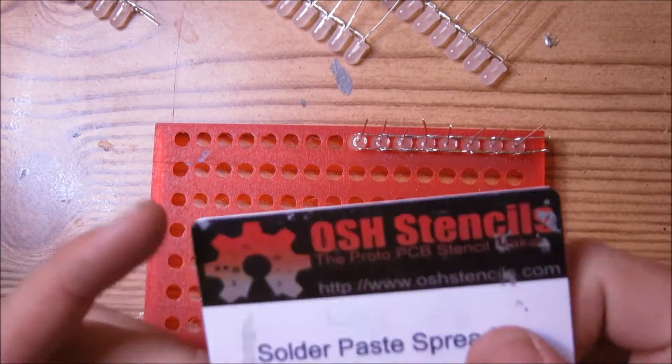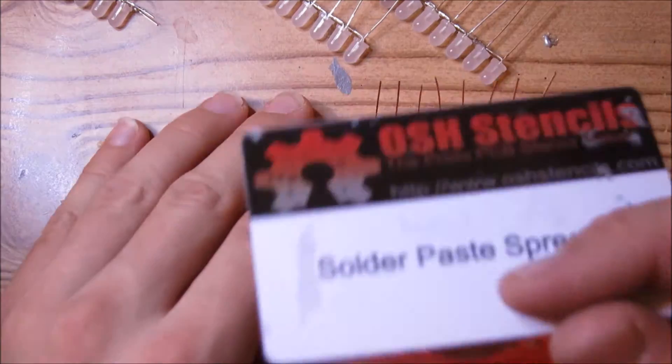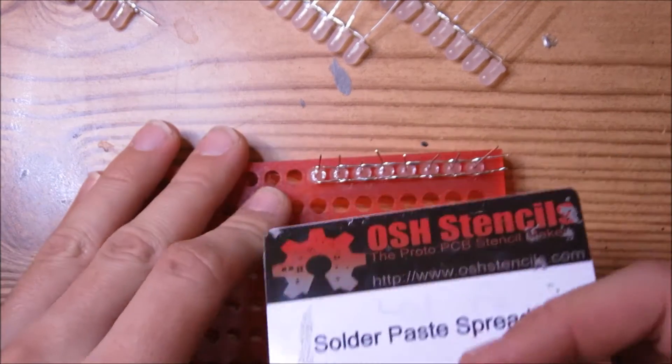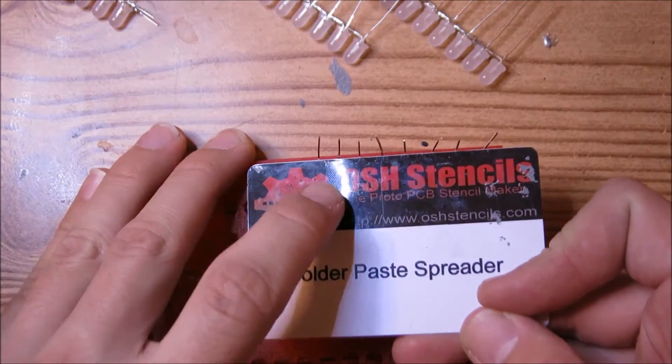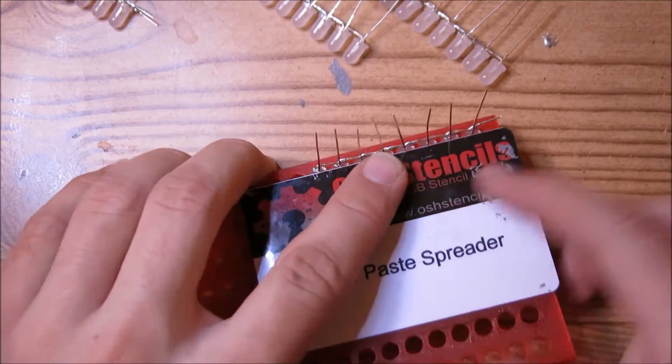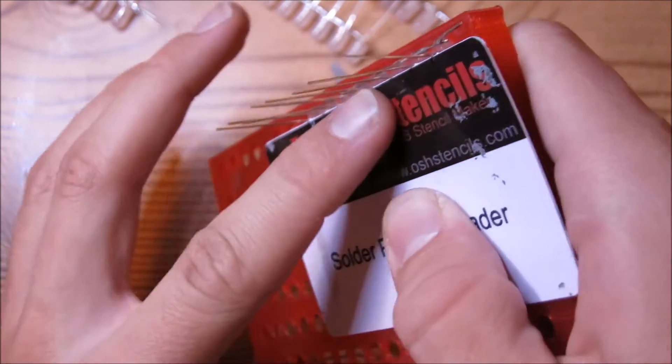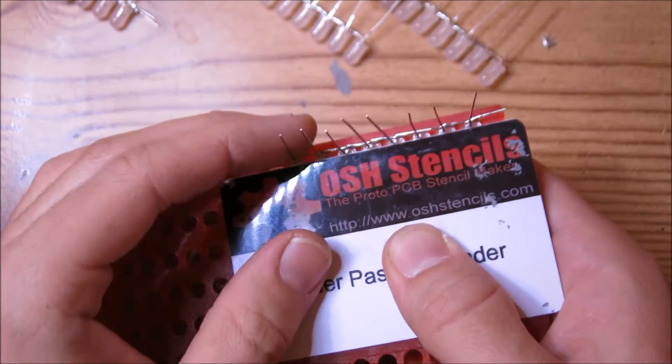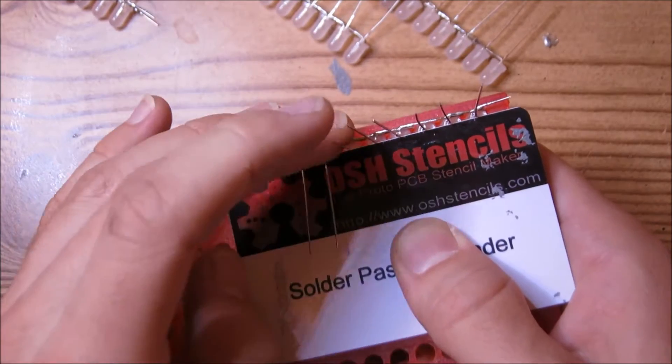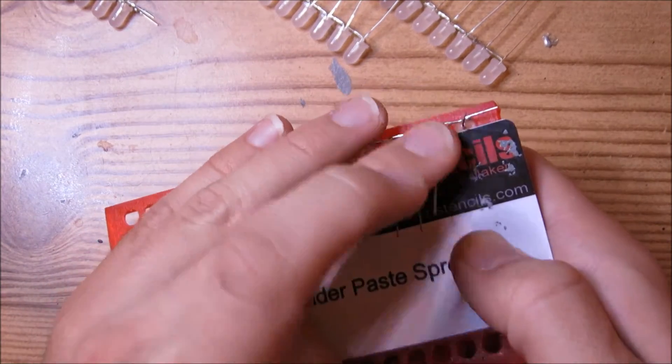So now what you want to do is take your credit card type object, it doesn't have to be a credit card, and then just take it, push it all the way, touching all the pins sticking up, push it down so that it's right at the edge here of the LEDs, and it's touching all of these pins, and what you want to do is bend all of these pins that are sticking up towards you so that you have something like this.